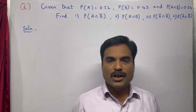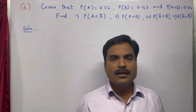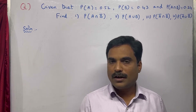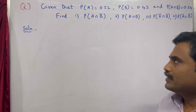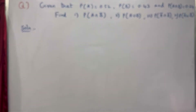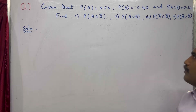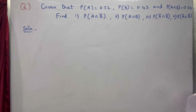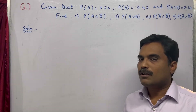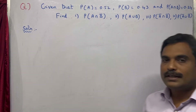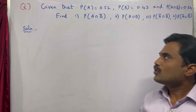Hi dear friends, welcome to my channel Yanam Dakshasila. In this new video I am going to solve a mathematical problem under the topic probability. The problem is: given P(A) = 0.52, P(B) = 0.43, and P(A∩B) = 0.24, find four things — P(A∩B̄), P(A∪B), P(Ā∩B̄), and P(Ā∪B̄). The probabilities of A, B, and their intersection are all given.